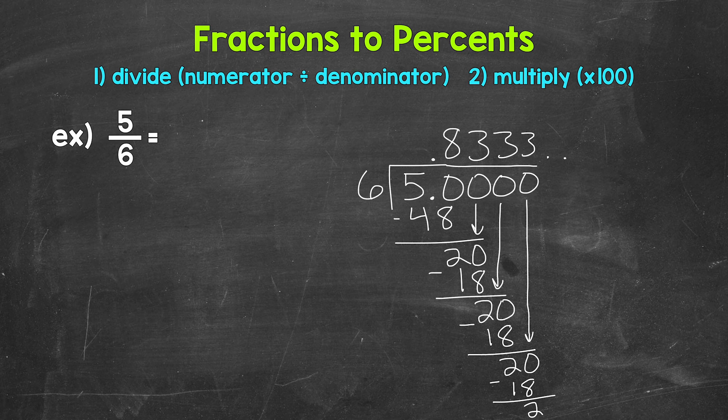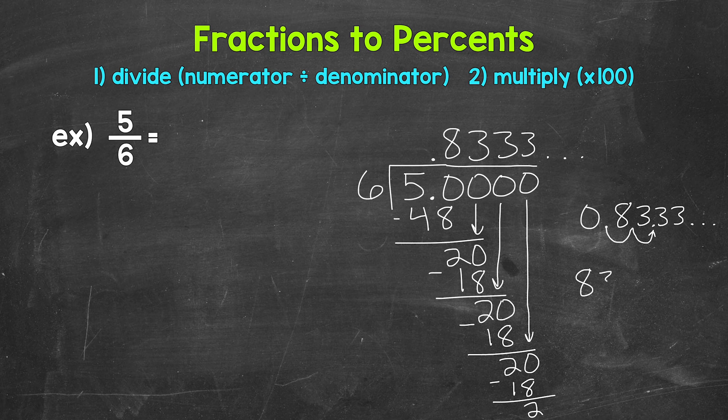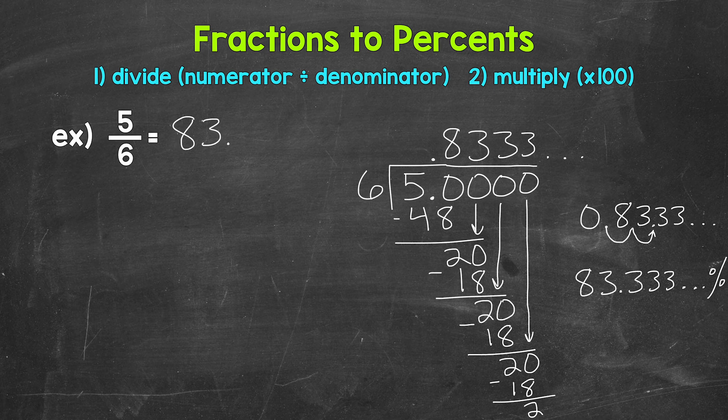So these 3's repeat and continue on forever. We can stop there and convert this decimal to a percent now. We do this by multiplying it by 100. We can multiply by 100 by moving the decimal twice to the right. So let's rewrite our decimal: 0.8333 and the 3 repeats. Move the decimal once, twice to the right. This gives us 83.3 repeating percent. We can write this as 83.3 with a bar above that 3 to show that that digit repeats. Percent.